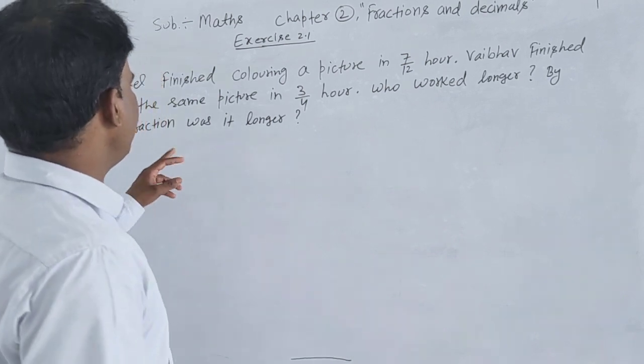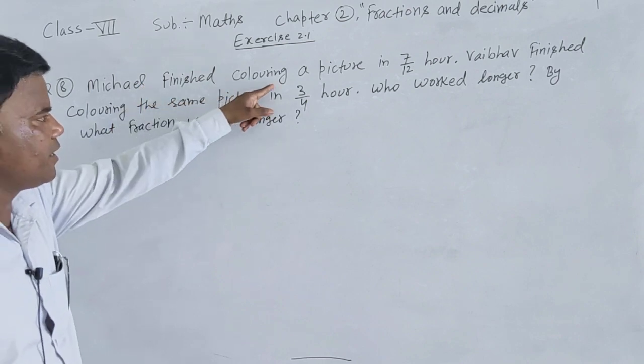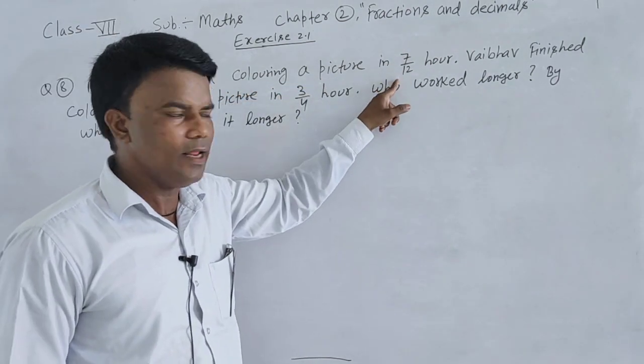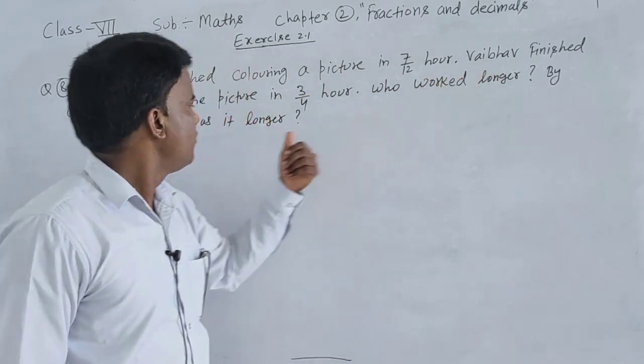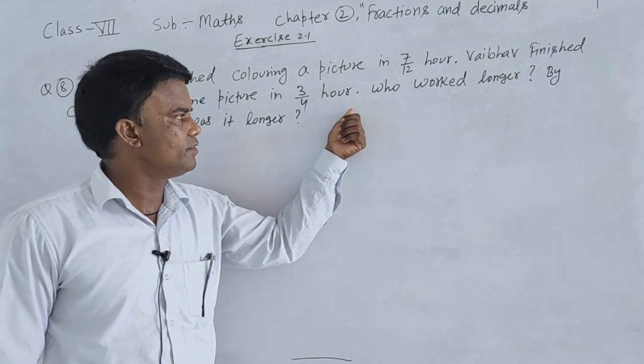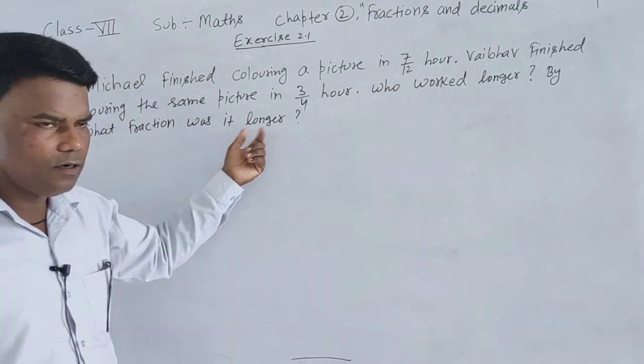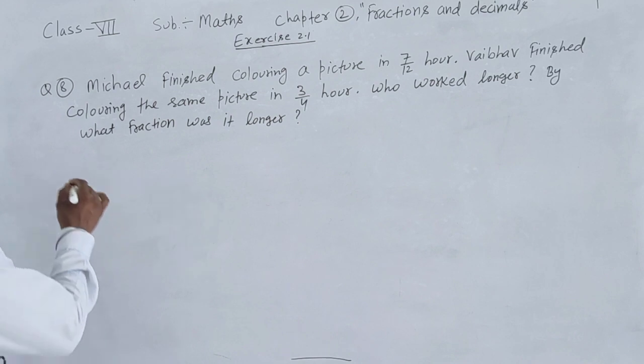Next we'll discuss question number 8: Michael finished coloring a picture in 7/12 hours. Vaibhav finished coloring the same picture in 3/4 hours. Who worked longer? By what fraction was it longer?